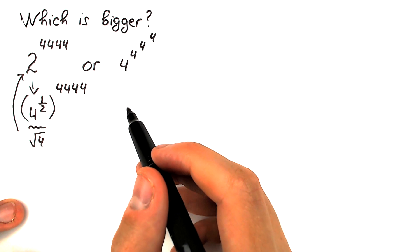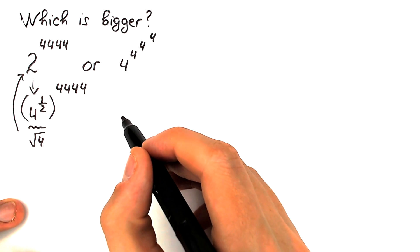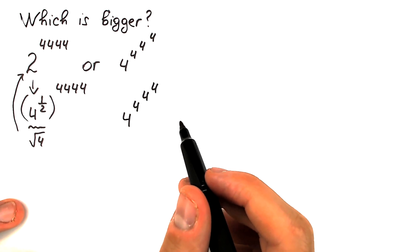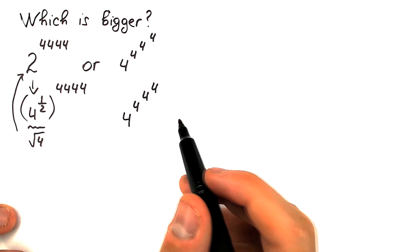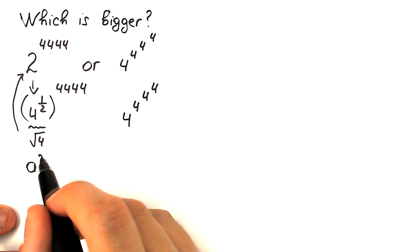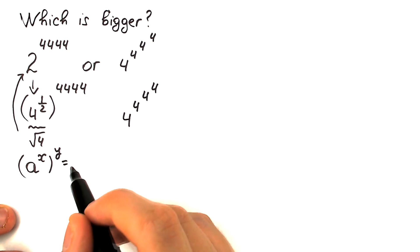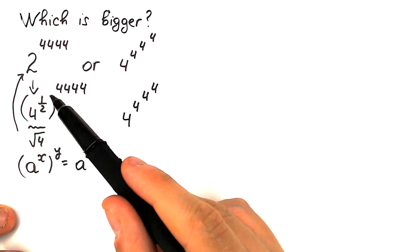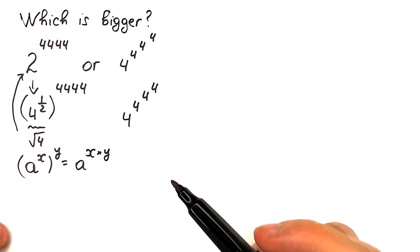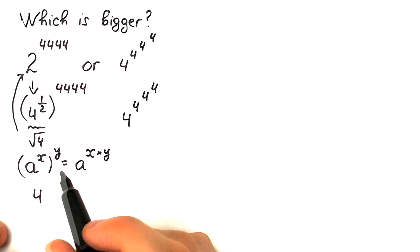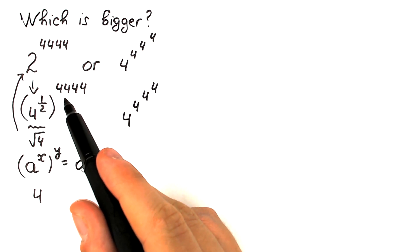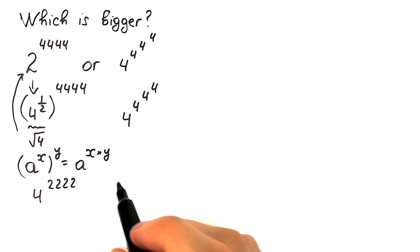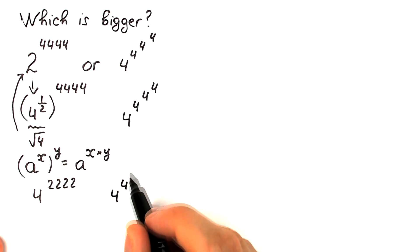So right now on the left-hand side we have (4^(1/2))^4444, and on the right-hand side we leave 4^(4^(4^4)) as is. The next step uses an important power rule: (a^x)^y = a^(x·y). Applying this rule, we multiply 1/2 times 4444, which gives us 2222. So the left-hand side becomes 4^2222, and the right-hand side remains 4^(4^(4^4)).